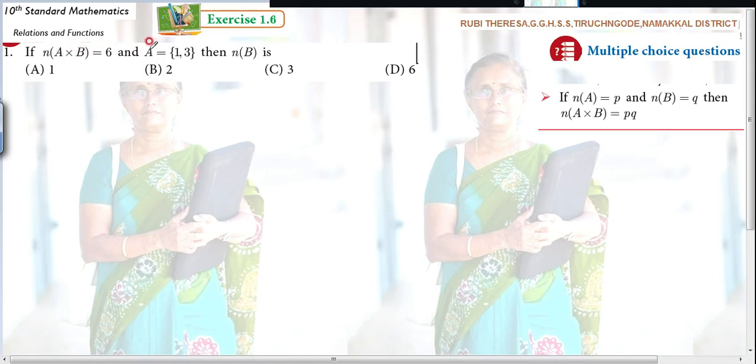Then A equals {1, 2}. Then n(B) is what? They have given 4 options. Which one is correct?